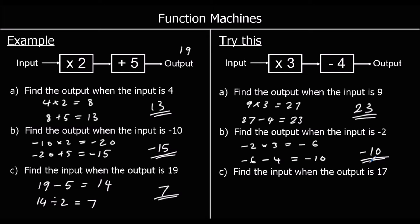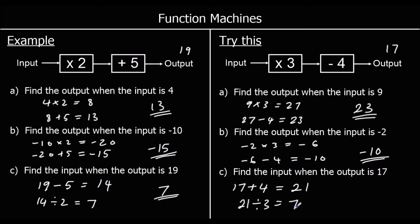Part C: find the input when the output is 17. So 17 is coming out of the machine — what went in? We can undo it by doing the opposite. The opposite of taking away 4 is adding 4. So add 4 onto 17 gives us 21. And then the opposite of timesing by 3 is dividing by 3. So 21 divided by 3 is 7. So the input must have been 7. Check: 7 times 3 is 21, and 21 take away 4 is 17.